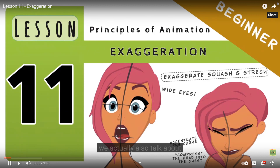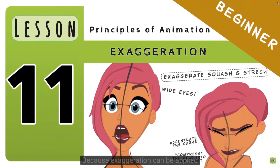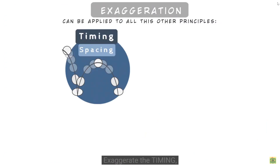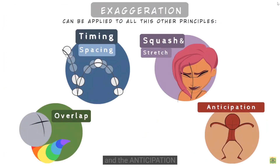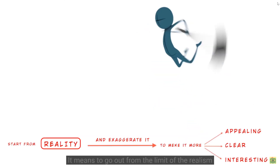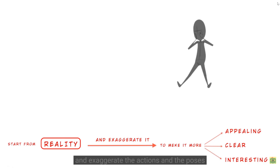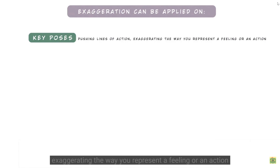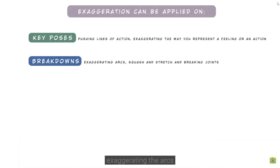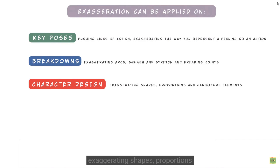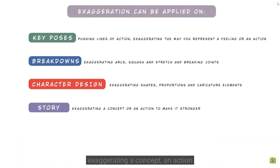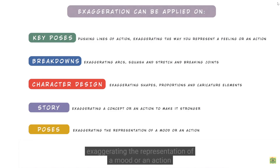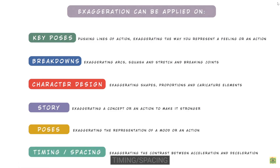Let's also talk about the exaggeration principle, because exaggeration can be applied to all the other principles as well. Exaggerate the timing, the overlap, the squash and stretch, and the anticipation. It means going beyond the limits of realism and exaggerating the action and poses to make the result more instantly readable. It can be applied on key poses, pushing lines of action, exaggerating the representation of a feeling in breakdowns, exaggerating the arcs and the amount of squash and stretch, breaking some joints, exaggerating character design shapes and proportions, exaggerating a concept in story, and in timing and spacing — making it more cartoony by exaggerating the contrast between acceleration and deceleration.